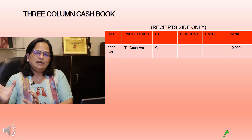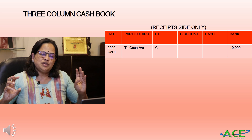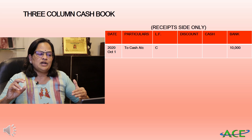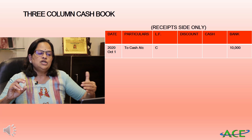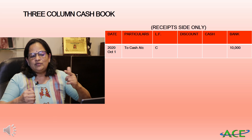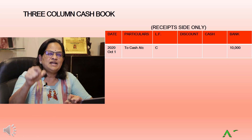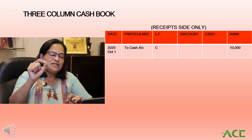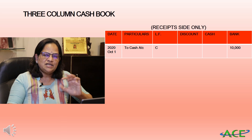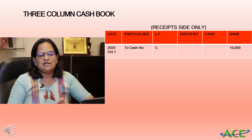In the receipt side of the three column cash book, for opening a bank account we write 'To Cash Account' and in the bank column we write 10,000 — that is very important. We write 10,000 in the bank column of the receipts side because the bank received 10,000.